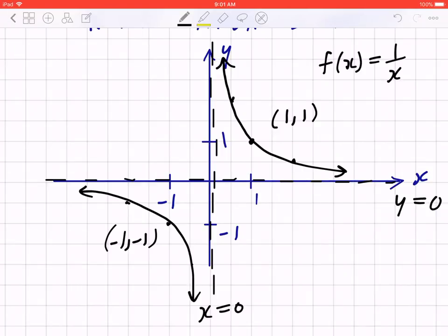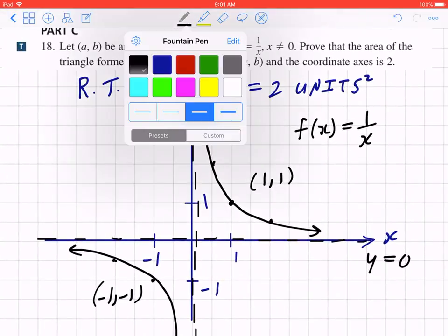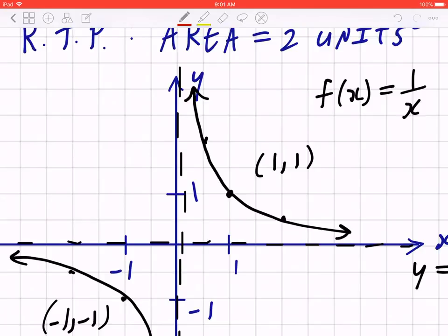And again, when they say find the point (a, b), this is any point, any point on this graph. So (a, b) could be here, or it could be here, it could be on the other side, it doesn't really matter. So I'm just going to pick a point, let's say there. I'm going to label this as (a, b).